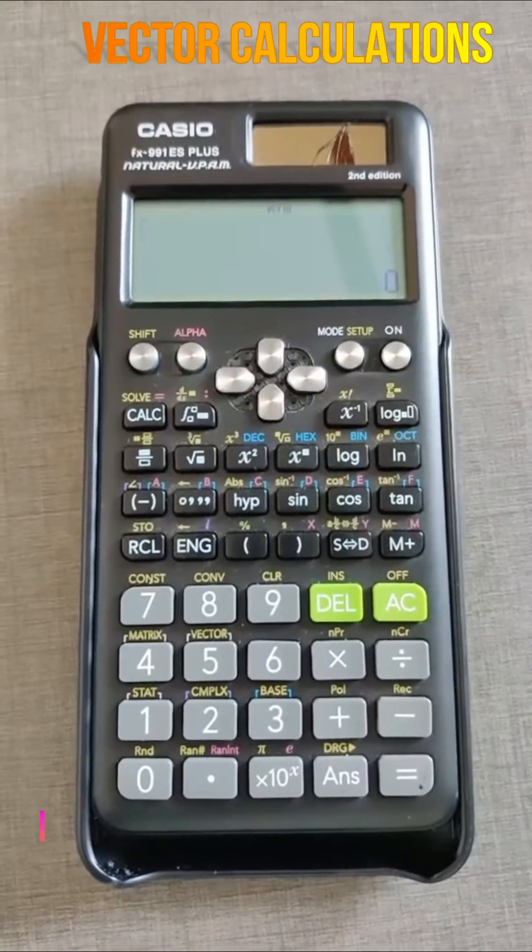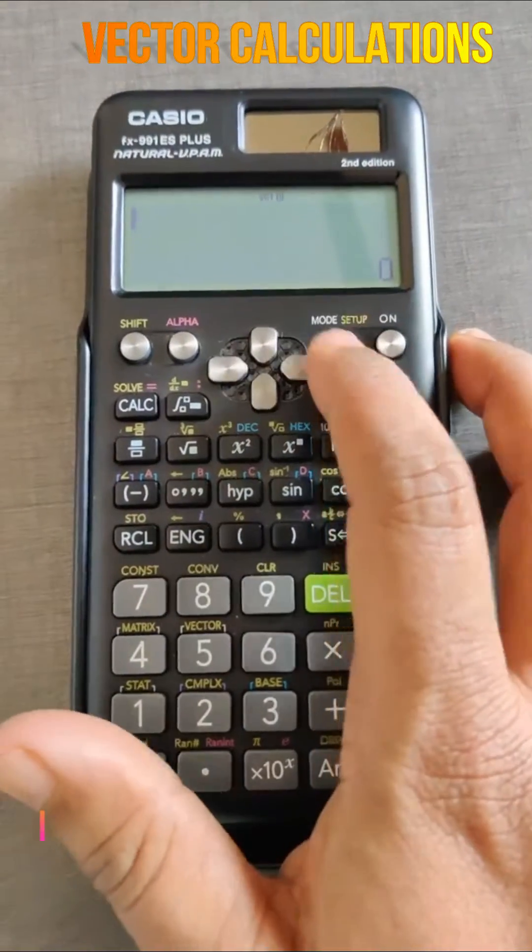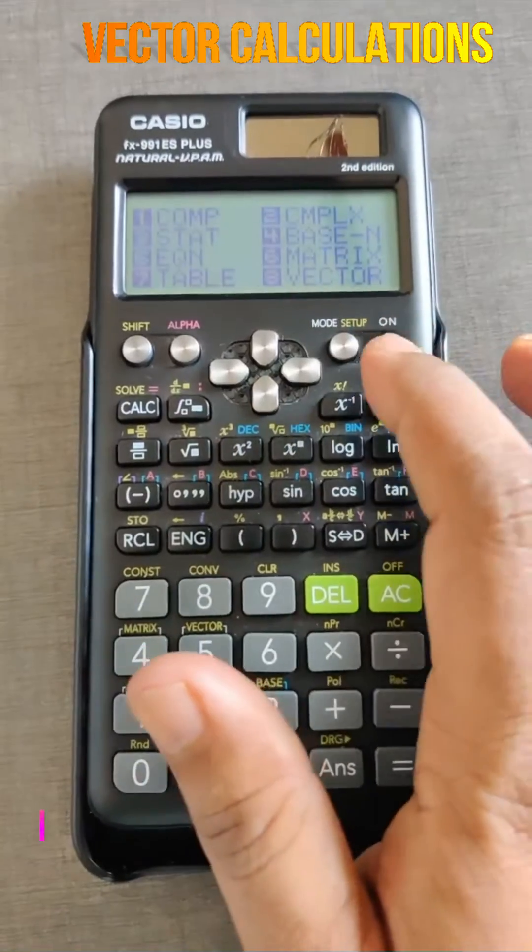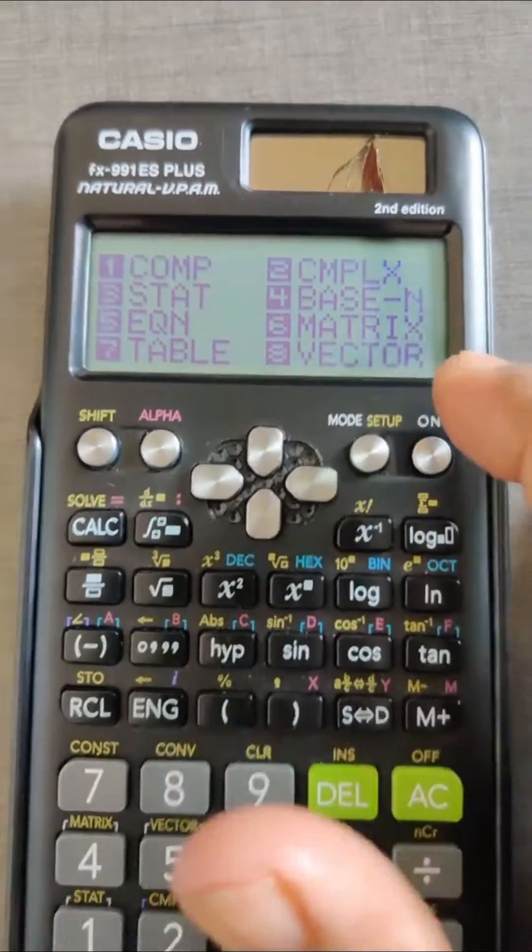We will learn how to use the calculator for vector calculations. First, you have to enter the vector. Press the mode button, and the 8th option is vector, so press 8.